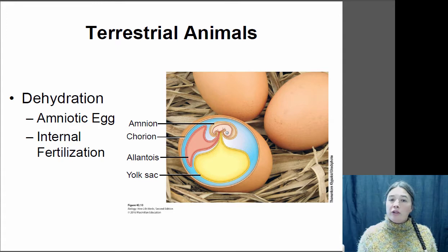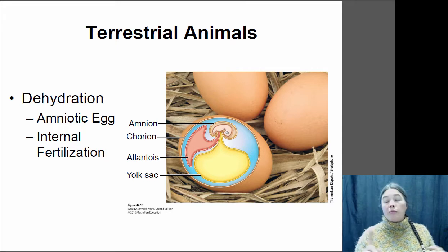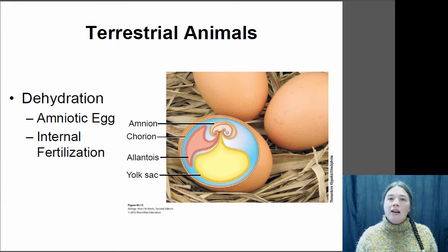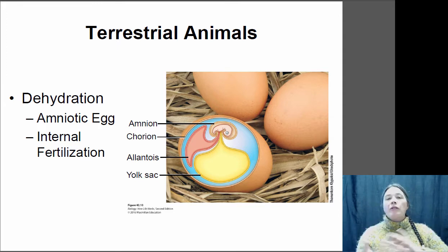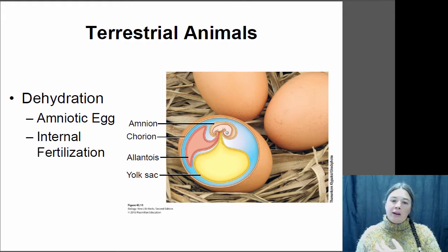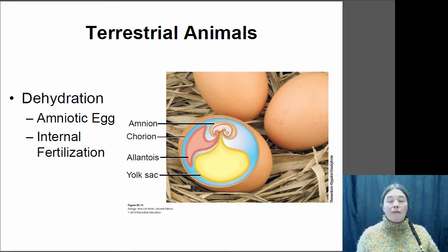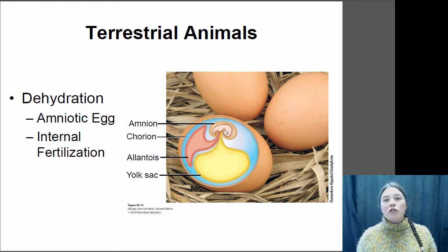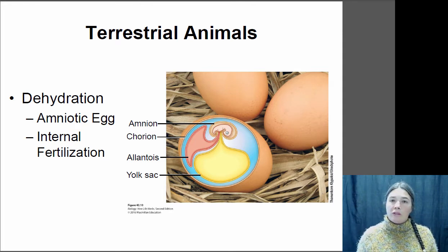Terrestrial animals have a few different adaptations that allow them to survive outside of the water. One is that terrestrial vertebrates have what's called an amniotic egg. An amniotic egg is an egg that contains all the water the embryo needs in order to survive, and it's surrounded by a membrane called the amnion that keeps all that water inside. Birds and reptiles have this amniotic egg that does not need external water to survive. Things like amphibians have to lay their eggs in the water because they don't have an amniotic egg. Also, terrestrial animals have internal fertilization where the sperm is introduced directly into the female's reproductive tract and fertilization occurs there.